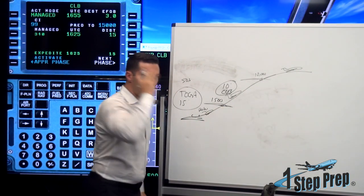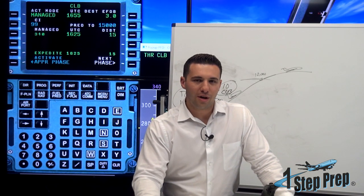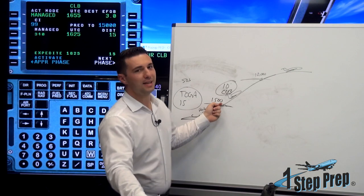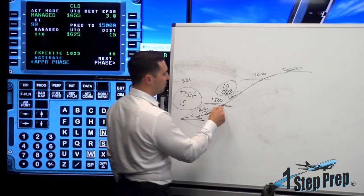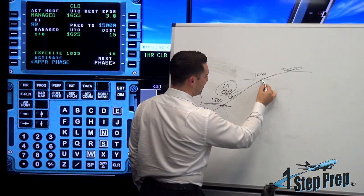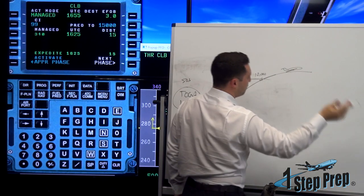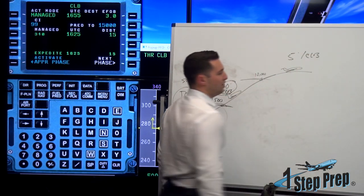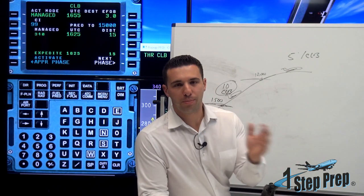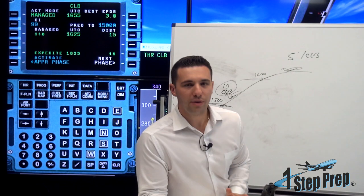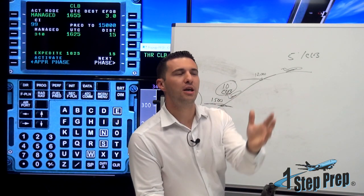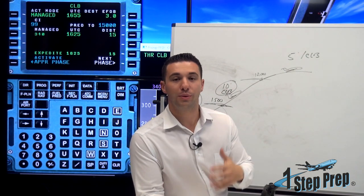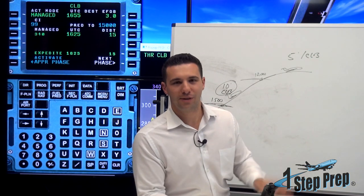Let's recap the airspeed unreliable memory item. Autopilot off, flight directors off, autothrust off. Pitch and thrust: if below thrust reduction altitude — basically on takeoff — toga and 15 degrees. That's what we essentially did. If above thrust reduction and below 10,000 feet, 10 degrees and climb — that's what the airplane did. If above 10,000 feet and above thrust reduction altitude, scenario 3: 5 degrees and climb — which is also what the airplane is doing anyway. The airspeed unreliable pitch and thrust settings we need to memorize are no different from what the airplane would be doing on any normal flight.